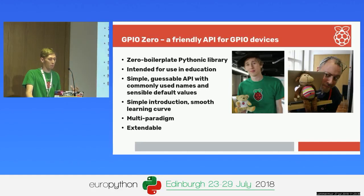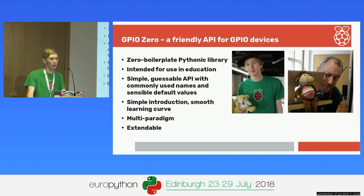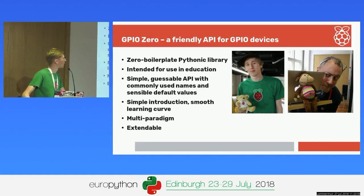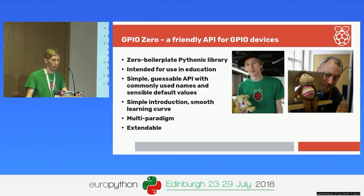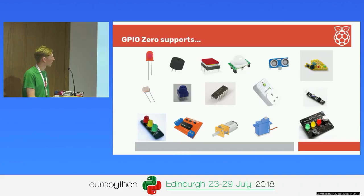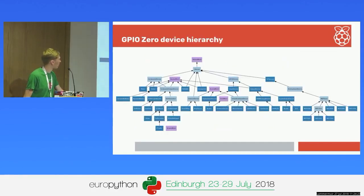We went for a multi-paradigm approach, which is one of the things I'm going to be focusing on in the talk. There isn't just one way to do something like a procedural way; there are various different methods you can use - the same way in Python you can start doing while loops and if statements, then move on to writing your own functions or using functional tools. It's very extendable: if there's a device we haven't got an implementation for, it's simple to build on existing classes and write your own. GPIO Zero supports all the basic electronic components and a few add-on boards, and there's a huge device hierarchy where everything builds on other things.